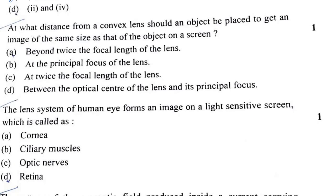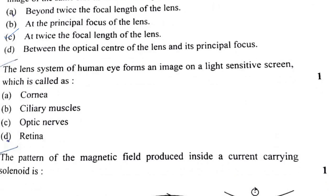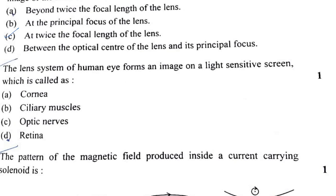Question 12: To get an image of the same size as the object on a screen using a convex lens, the object should be placed at twice the focal length of the lens.